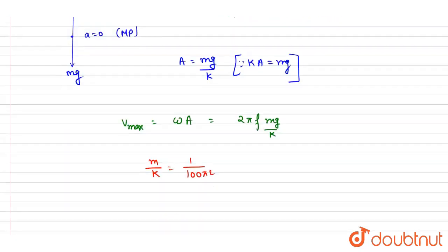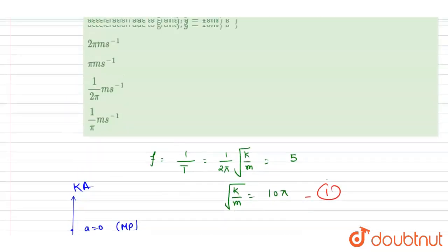So I will write down the v max is equals to 2π into the frequency f, and m by k value we got is this, and g is 10. So this 10 and this 5 into 2 is again 10, so you will get 1 by π. One π will get cancelled out, so the maximum velocity will be 1 by π.